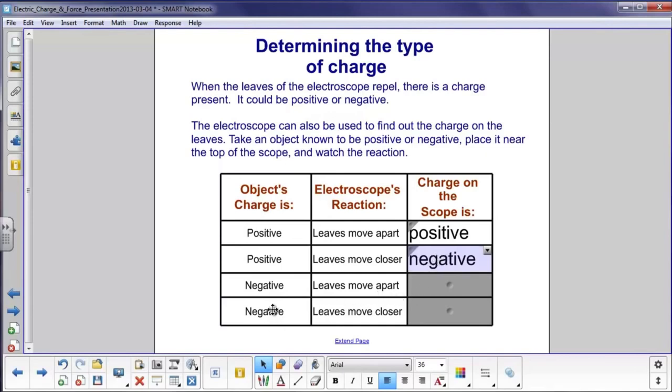And then you can likewise see if the object has a negative charge, the electroscope leaves move further apart. You would imagine that the electroscope would be charged negatively, and then, of course, the opposite. If they move closer, there was a positive charge.